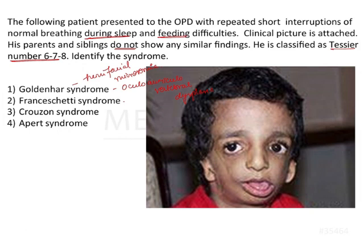The second option is Franceschetti syndrome, which is the alternative name for Treacher-Collins syndrome, also known as mandibulofacial dysostosis. Treacher-Collins syndrome has characteristic facial features that are unique to this syndrome.